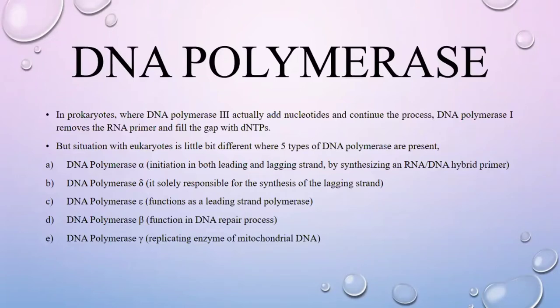अगर हम prokaryotes देखें तो DNA polymerase 3 nucleotides को add करता है और process को continue करता है, और DNA polymerase 1 RNA primer को remove करता है और gap को dNTPs से fill करता है। तो यह दोनों मिलकर polymerase activity को continue करते हैं। लेकिन eukaryotes में पांच types के DNA polymerase होते हैं।